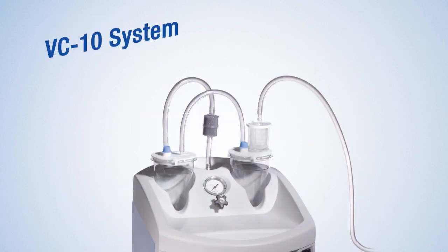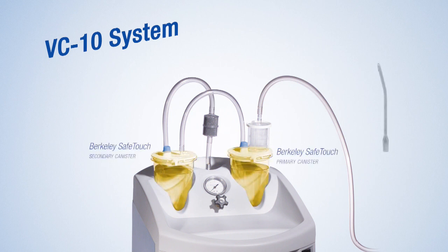The Berkeley VC10 system is shipped fully assembled and includes the optional-use foot pedal, power cord, and a starter kit of Berkeley SafeTouch disposable accessory components. Starter kit accessory components include 6 Berkeley SafeTouch collection canisters, lids, and sealing caps.